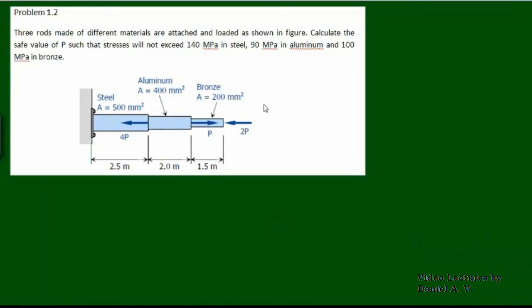When we have such a system, the first thing we need to check is the amount of force in each segment. There is a net force of 2P to the left, 4P to the left, and P to the right — totaling 6P to the left and 1P to the right. The net force is 5P towards the left, and since the system is in equilibrium, a reaction of 5P will be developed at the support to oppose this active force.